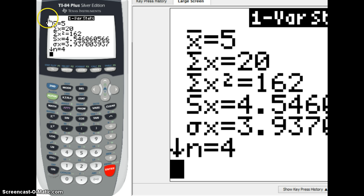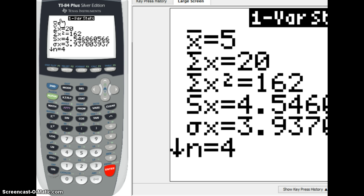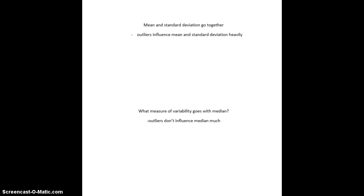Now, standard deviation. That's right here. That's the one that says SX. That is the standard deviation for the sample of numbers. Rounding to one decimal place. What did we get by hand? 4.5. What does the calculator get? 4.5.